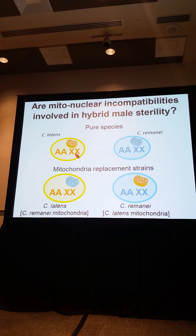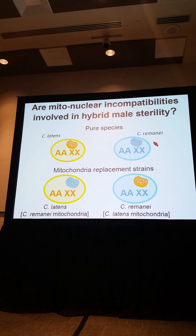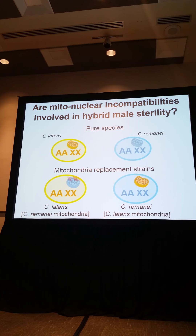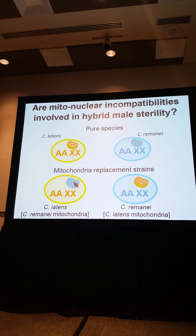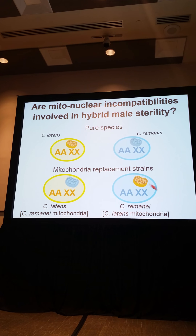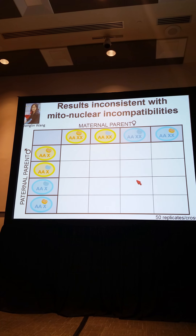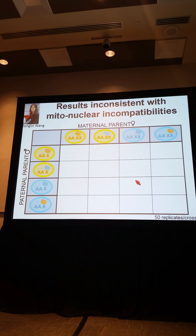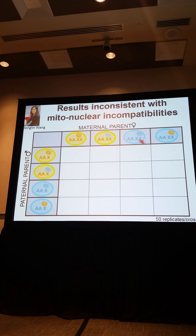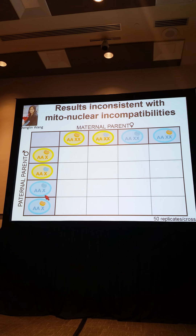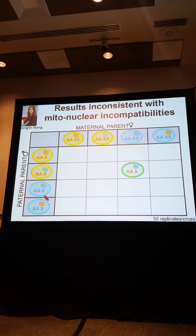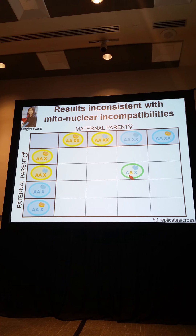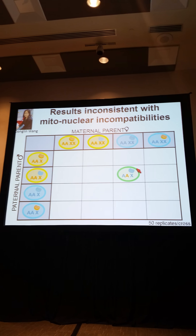To test this, we used pure C. latens and pure C. remanei, and by 20 generations of backcrossing we created mitochondrial replacement strains: C. latens with the complete nuclear genome but remanei mitochondria, and C. remanei with C. latens mitochondria. We then used these four strains in crosses in all possible combinations — all strains as maternal parent crossed to all strains as paternal parent. Each hybrid male ends up with 50% autosomal genome from each parent, plus the X chromosome and mitochondria from the mother.